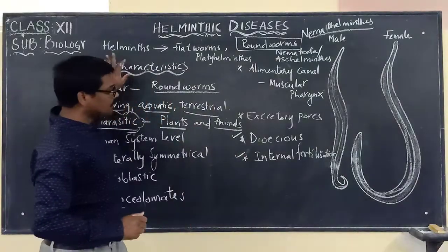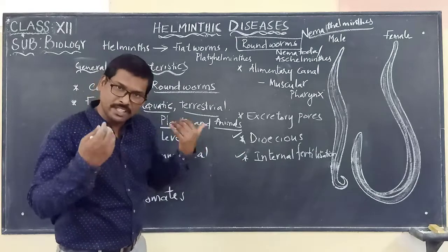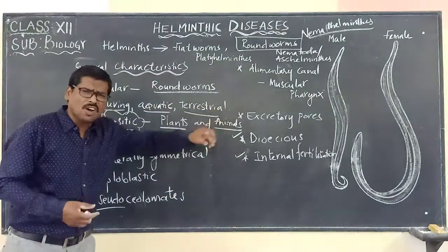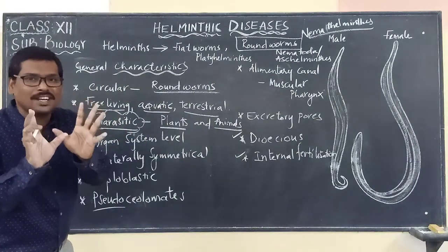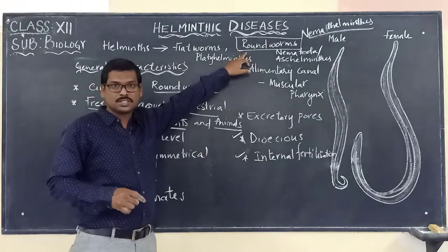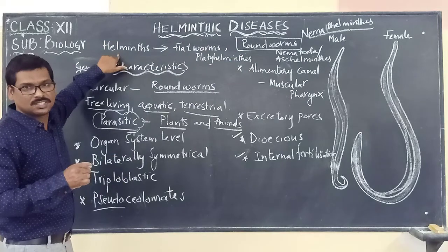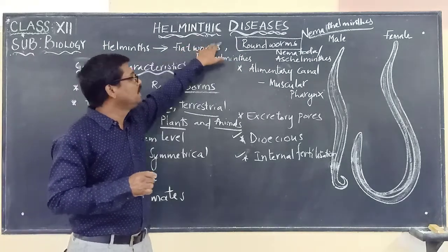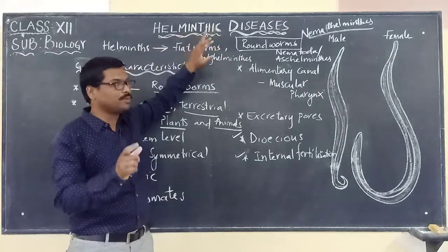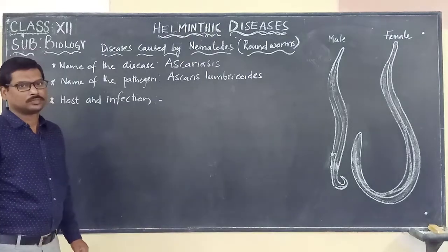The last point under the general characteristics is that they show internal fertilization — fertilization takes place internally. These are all the basic general characteristics we should keep in mind when talking about the roundworms, which come under the helminths, the other group being the flatworms, both causing helminthic diseases.